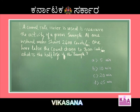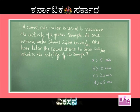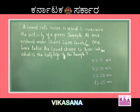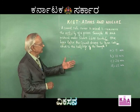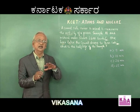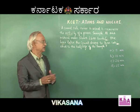Moving to the next problem: a count rate meter is used to measure the activity of a given sample. At one instant the meter shows 2400 counts per minute. One hour later the count drops to 300 counts per minute. What is the half life of the sample? Looking at the options, you won't get the answer unless you write some equations.